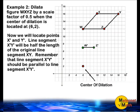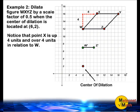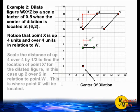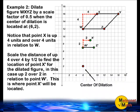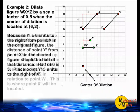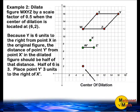Now we must figure out where points X and Y will be located for our dilated object. With our original shape, point X in relation to point W was located 4 units above and 4 units to the right — up 4, over 4. Because our scale factor is 1 half, we are going to do half of both of those distances. So instead of up 4, over 4, we make our point up 2 and over 2 — that's where point X will be located. Point Y is 6 units directly to the right of point X, so for our dilated shape, point Y is 3 units to the right of dilated point X.